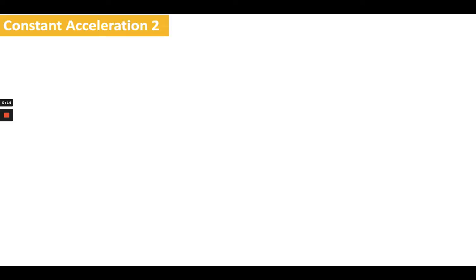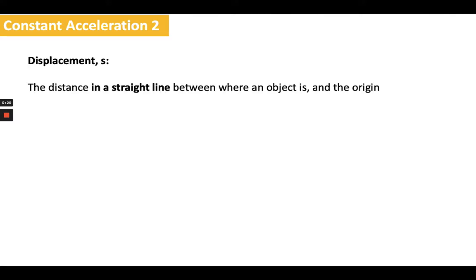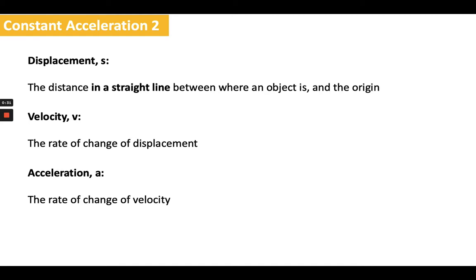I'm going to start by recapping our three key variables and their definitions. We should know from last time that displacement, labelled as s, is the distance in a straight line between where an object is and the origin or where it started. Velocity v is the rate of change of displacement, and acceleration a is the rate of change of velocity.